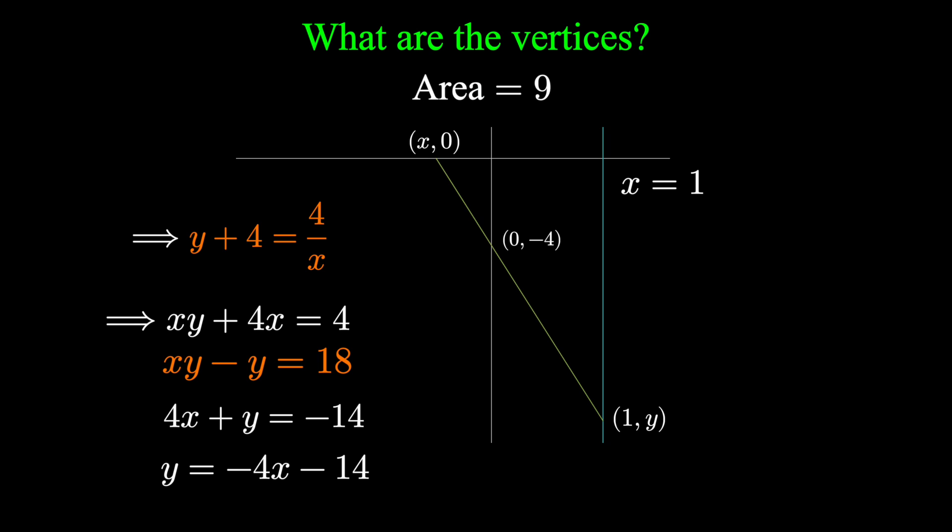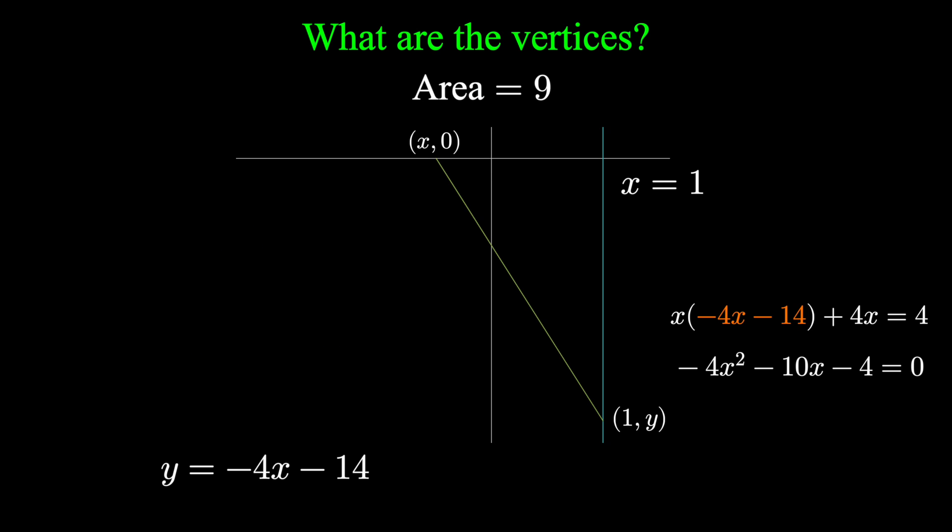Now we've solved for y. Substitute that back into the area equation: x times minus 4x minus 14 plus 4x equals 4. Shuffling this around is a quadratic equation we know how to solve using the quadratic formula. In this case, x is going to be negative 2 and also minus one half. We can plug each of those x values back into either equation to find the corresponding y values of negative 6 and negative 12.